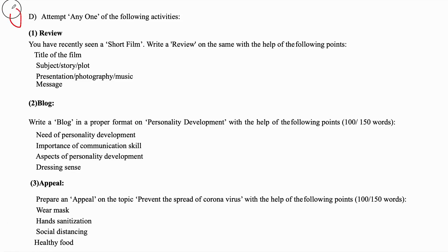So this is question number 4D. The question says: attempt any one of the following activities. There are three activities given here. You need to attempt any one out of three. Before attempting, read all three activities carefully, understand them well, and choose the one in which you are able to write.